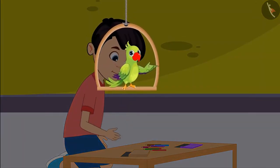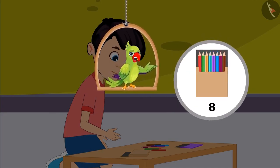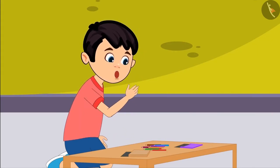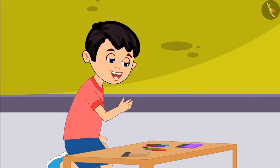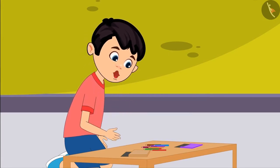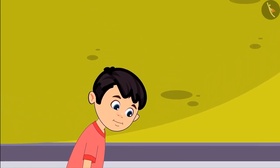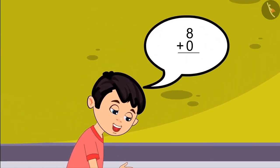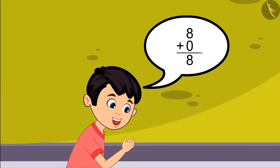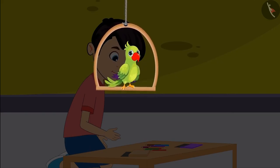Children, can you tell how many colors does Chotu have in total? When we add objects to some more objects, the total number increases. But earlier also, I had 8 colors. Oh yes! Since one box has 8 and the other box has 0 colors, the total number of colors is 8. So children, did you see — when Chotu added the colors of the two boxes, one box was empty, which means it had 0 colors and the other box had 8 colors. So Chotu has 8 colors in total.